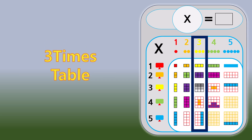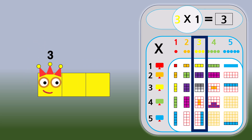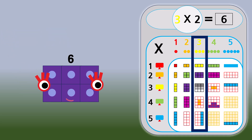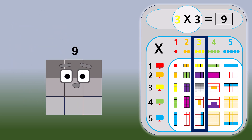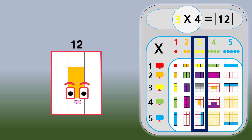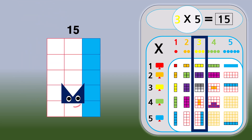3 times table. 3 times 1 equals 3. 3 times 2 equals 6. 3 times 3 equals 9. 3 times 4 equals 12. 3 times 5 equals 15.